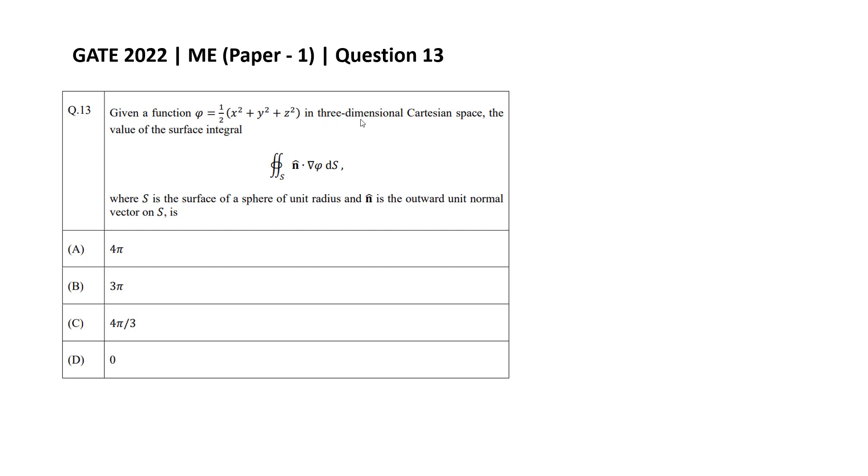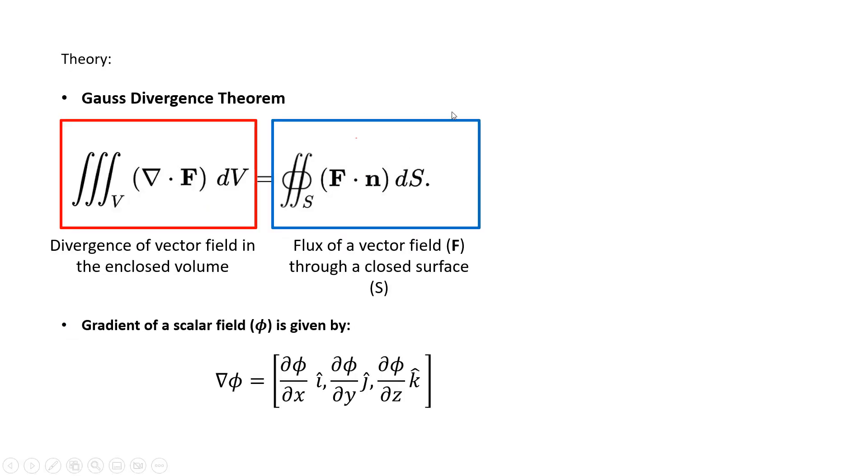In a three-dimensional Cartesian space, the value of the surface integral n̂ dot grad φ dS, where S is the surface of a sphere of unit radius and n̂ is the outward unit normal vector on S is... and these are the four options given to us.